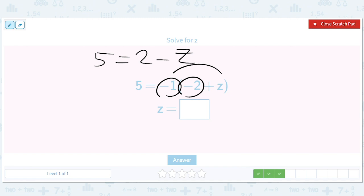So then let's add z to both sides. So we cancel this out. And we get z plus 5 equals 2. And we subtract 5 from both sides. And we get z equals negative 3.